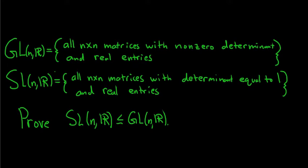SL_n(R) is called the Special Linear Group. In this video we're going to prove it's a subgroup of GL_n(R). It's the set of all n by n matrices with determinant equal to 1 and real entries. So clearly it's a subset because 1 is a non-zero number, and every element in the Special Linear Group is also an element in the General Linear Group.